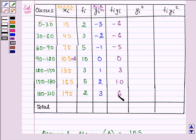10 and then 6. Now find out yi square and that is equal to minus 3 the whole squared giving us 9, minus 2 the whole squared is 4, minus 1 the whole squared is 1 and so on.